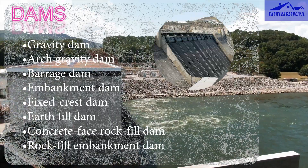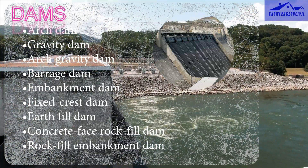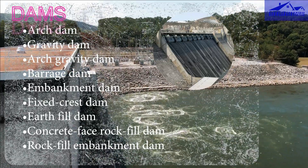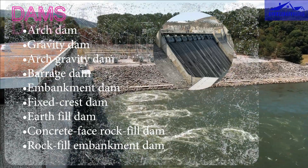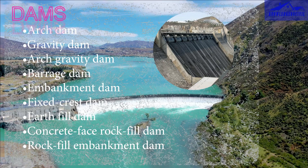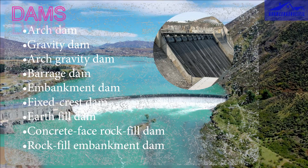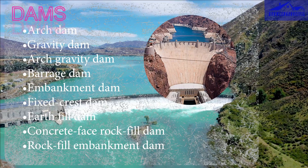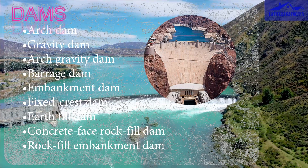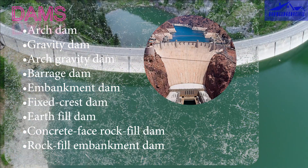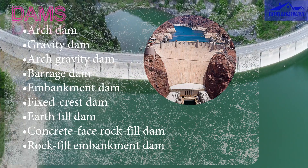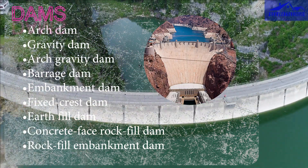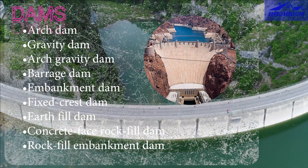Gravity dams are massive structures that rely on their weight and the force of gravity to resist the horizontal pressure of water. They are usually made of concrete and are suitable for wide valleys. Arch gravity dams combine features of both arch and gravity dams. They have an arched shape, but their weight also contributes to resisting the water pressure.